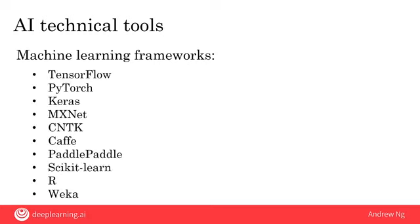So if you hear of any of these — TensorFlow, PyTorch, Keras, MXNet, CNTK, Caffe, PaddlePaddle, Scikit-Learn, R, or Weka — all of these are open source machine learning frameworks that help AI teams be much more efficient in terms of writing software.